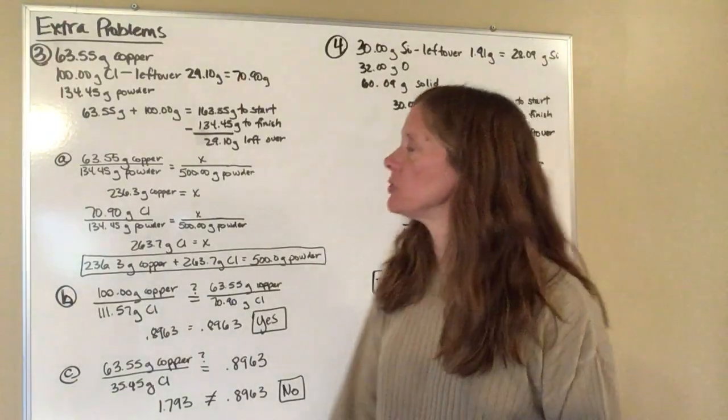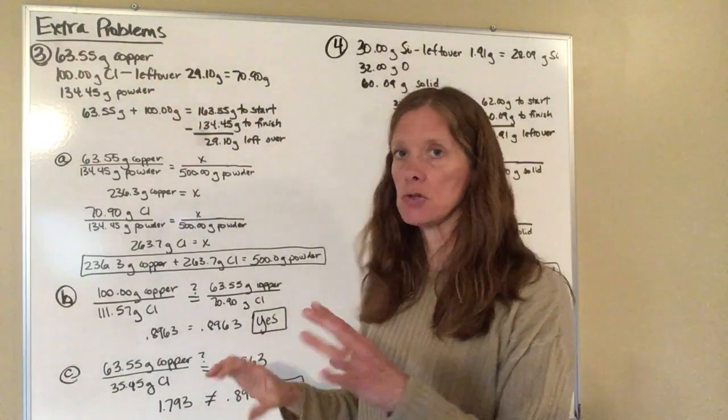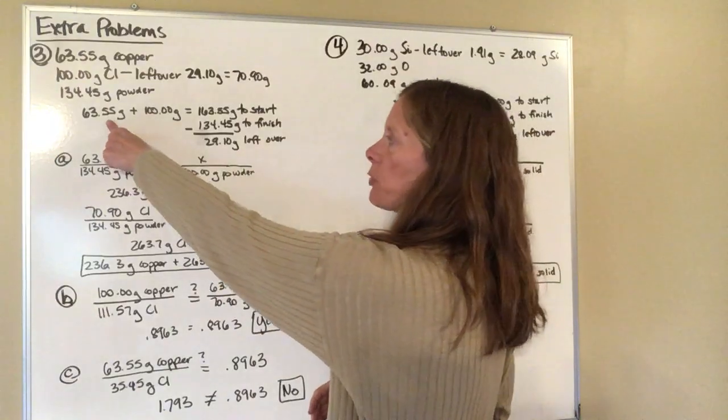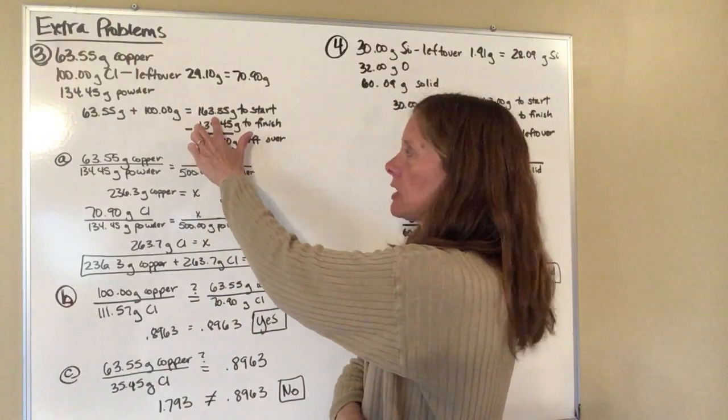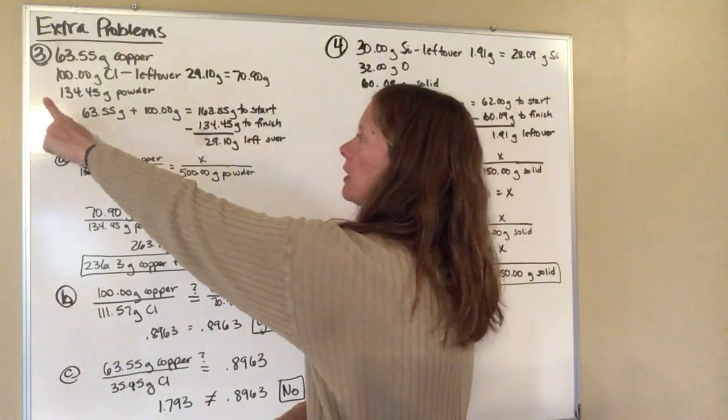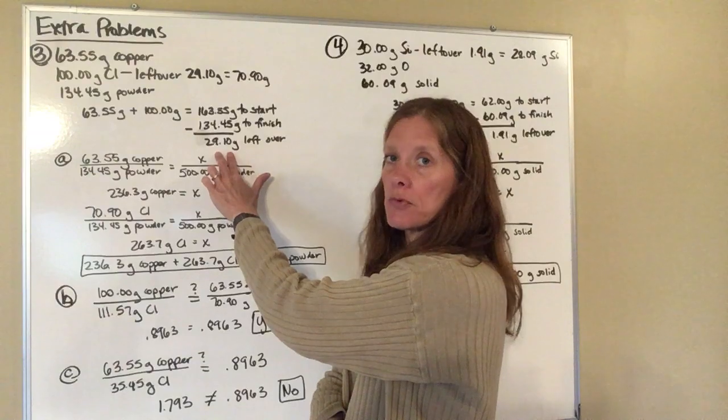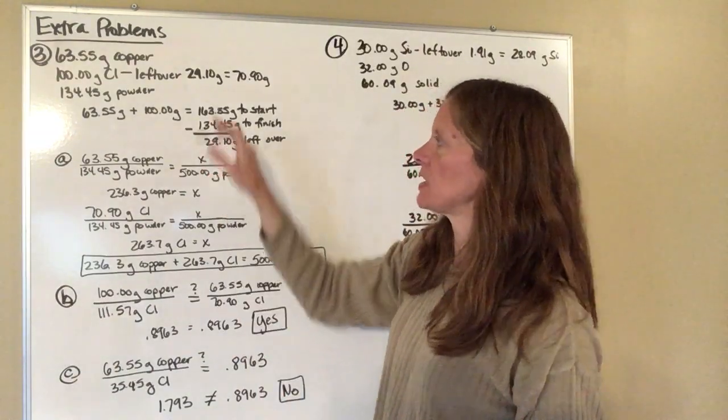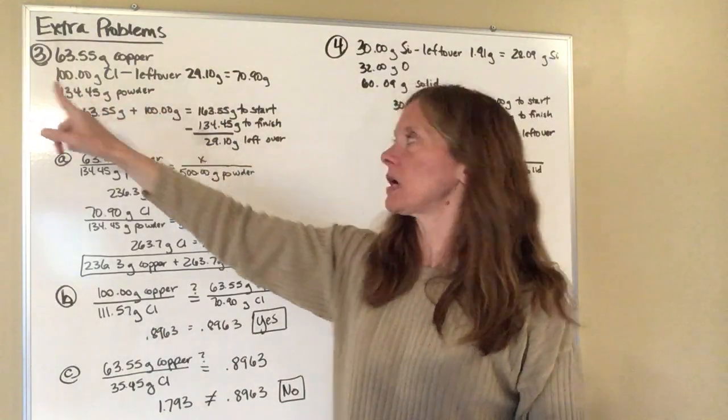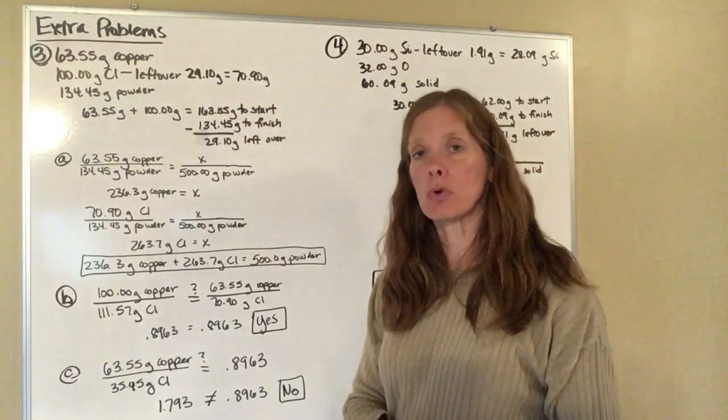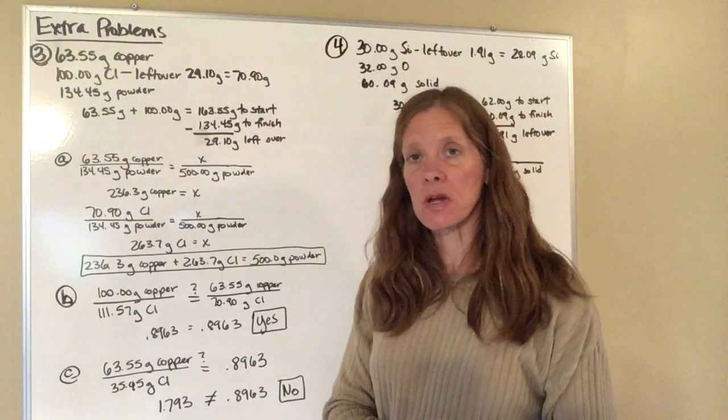So the first thing I'm going to have to do is I'm going to have to figure out exactly how much chlorine was used to make this powder. So I'm going to use the law of mass conservation. That's 63.55 grams of copper plus 100 grams of chlorine that made 163.55 grams to start. I only made 134.45 grams of the powder so that means I had 29.10 grams leftover. So that 29.10 grams was leftover chlorine. So if I subtract that from the 100 grams that will give me 70.90 grams of chlorine that were actually used in the compound.